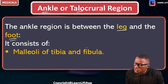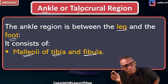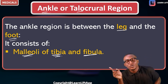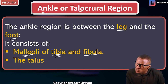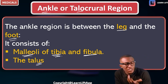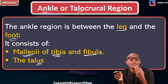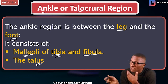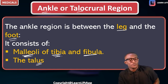How is the ankle formed? It consists of the malleoli of the tibia and the fibula. Just as we have the lateral condyle and medial condyle of the femur and tibia, we have the malleoli of the tibia and the fibula forming the ankle joint.